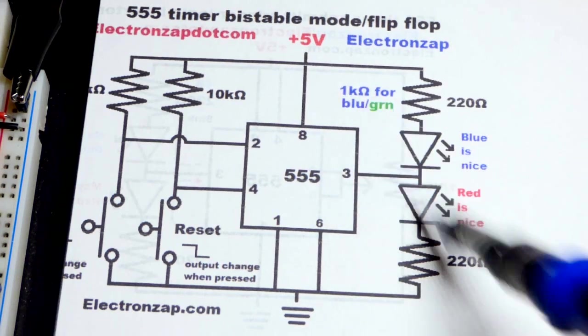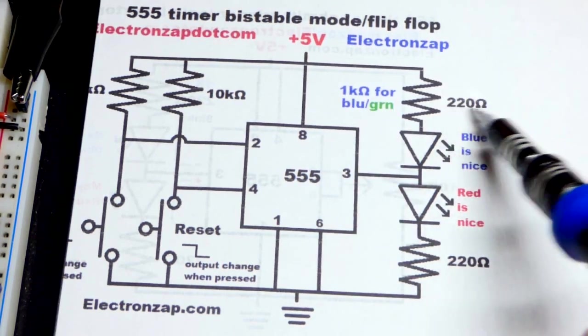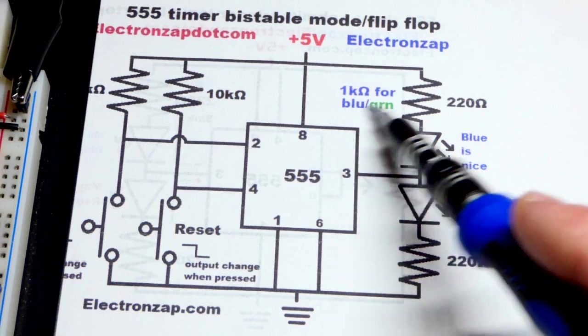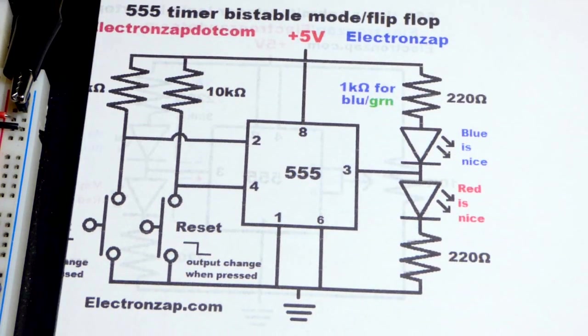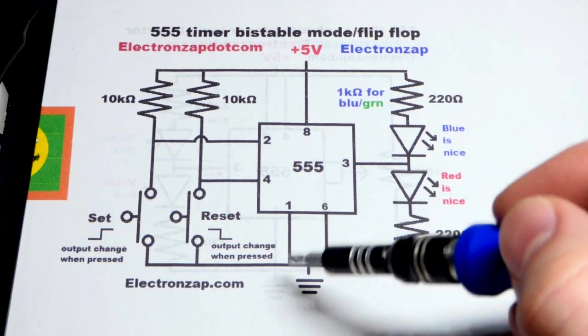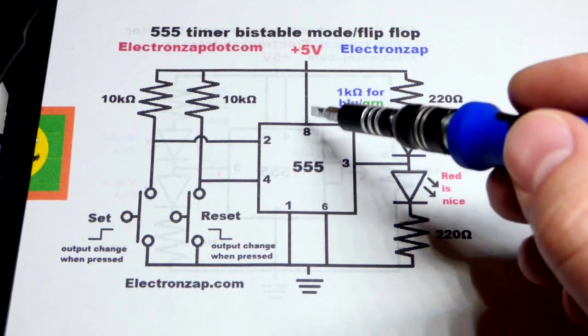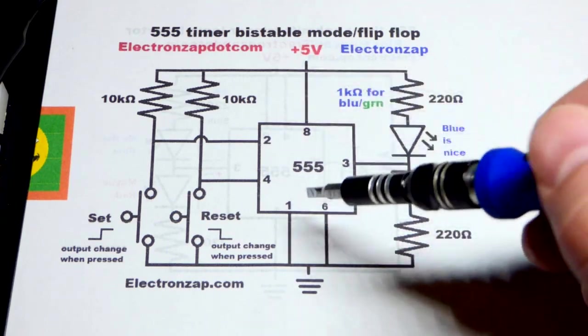We're going to use one kilo ohm for it. If they're both red, 220 works just fine. Blue and green are brighter so you might as well go somewhat higher with resistance and use a one kilo ohm resistor. We have to power the integrated circuit, pin number one to the negative supply, pin number eight to the positive supply.